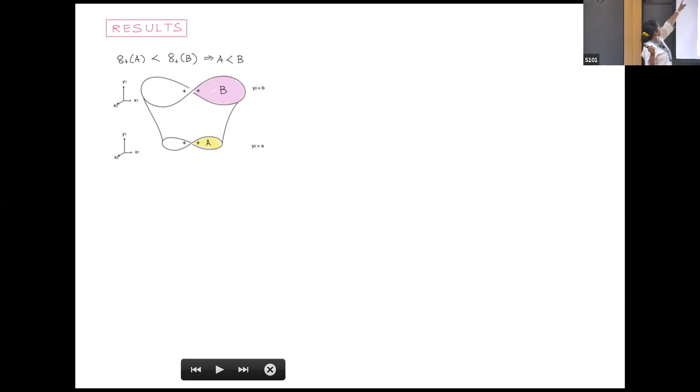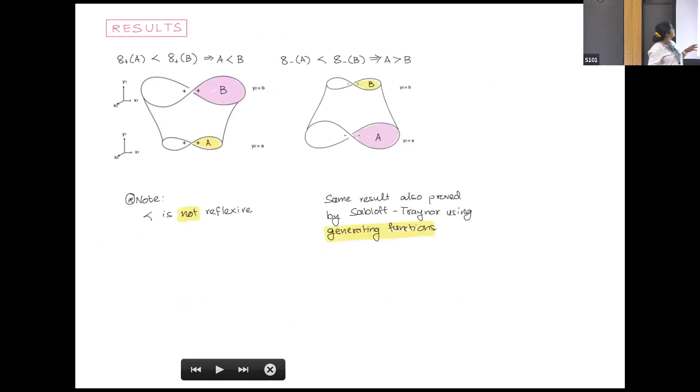We get some results on when such things can exist. The first result is for 8 plus knots. If you have a plus crossing, then this lobe has to grow. The opposite happens if you take the minus crossing. The lobe has to shrink as you go upwards. This relation is not reflexive. This result was proved by Josh Sabloff and Lisa Traynor using generating functions in a 2008 paper.